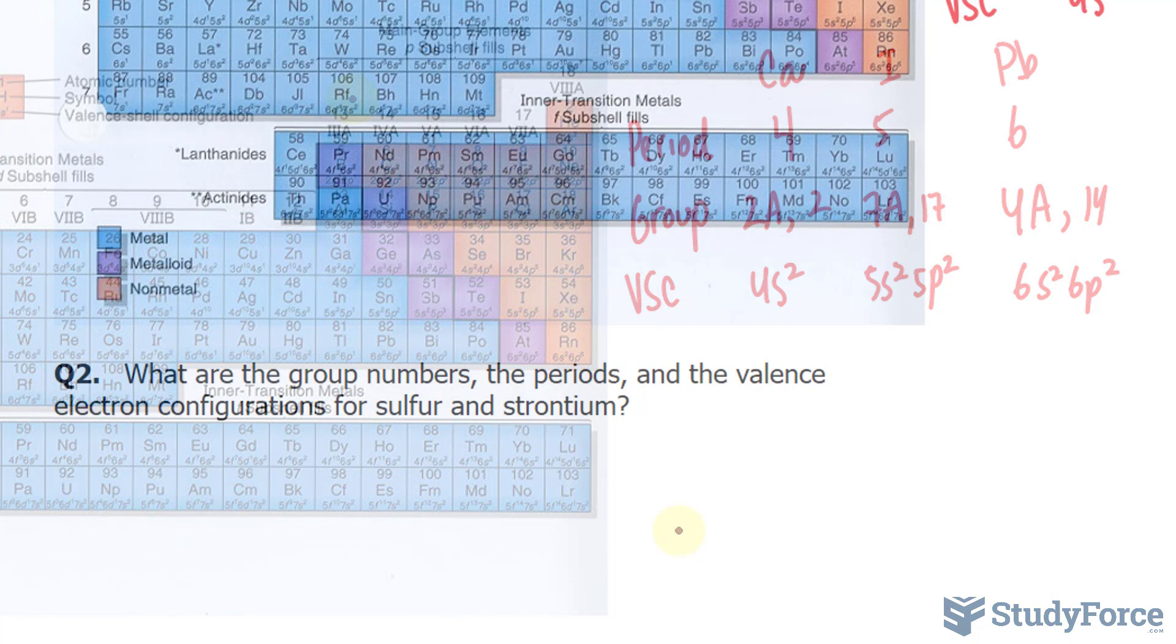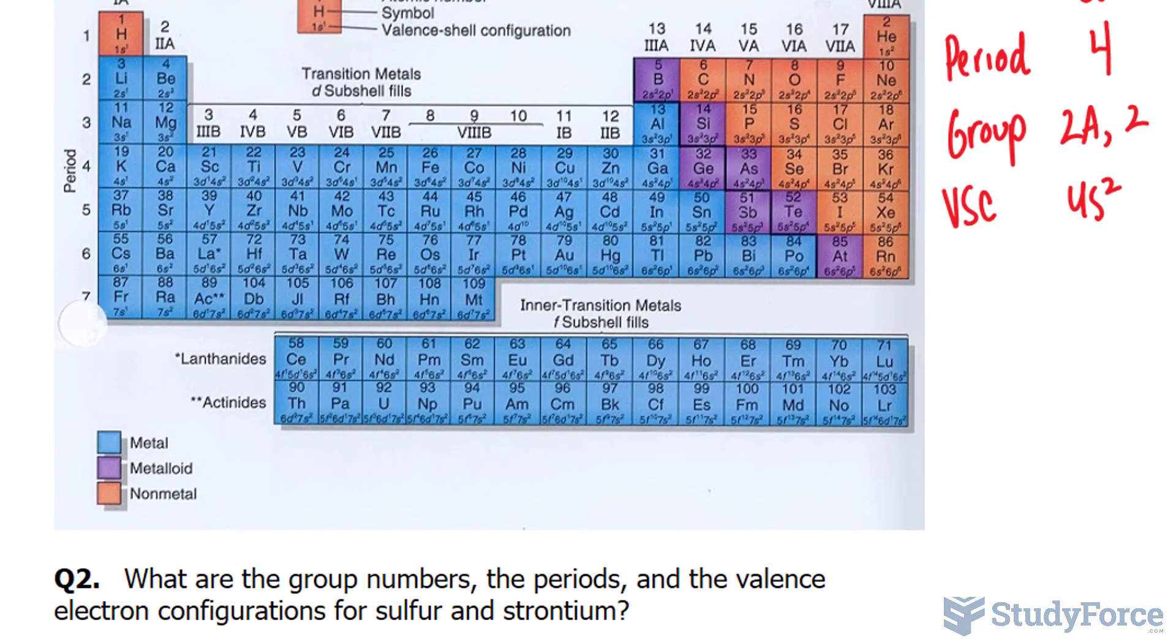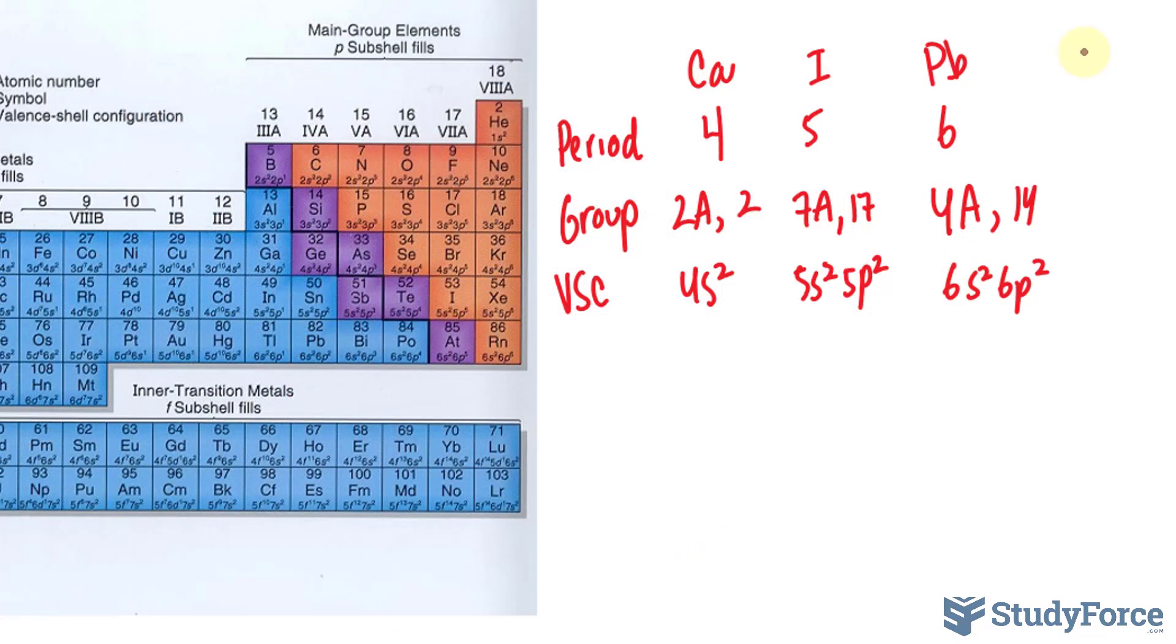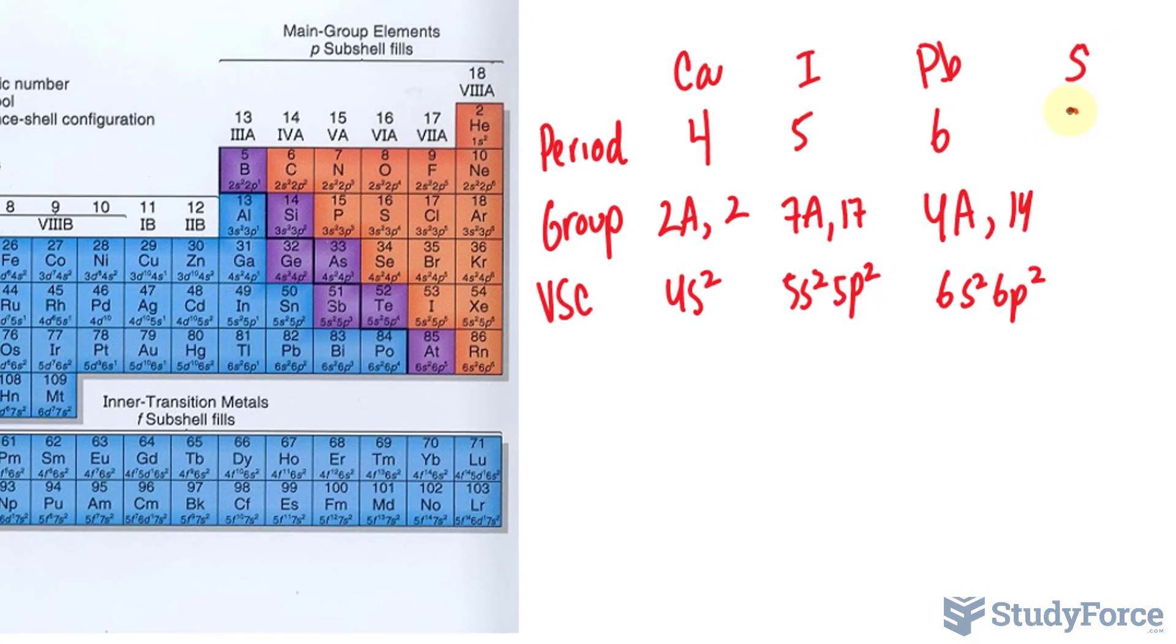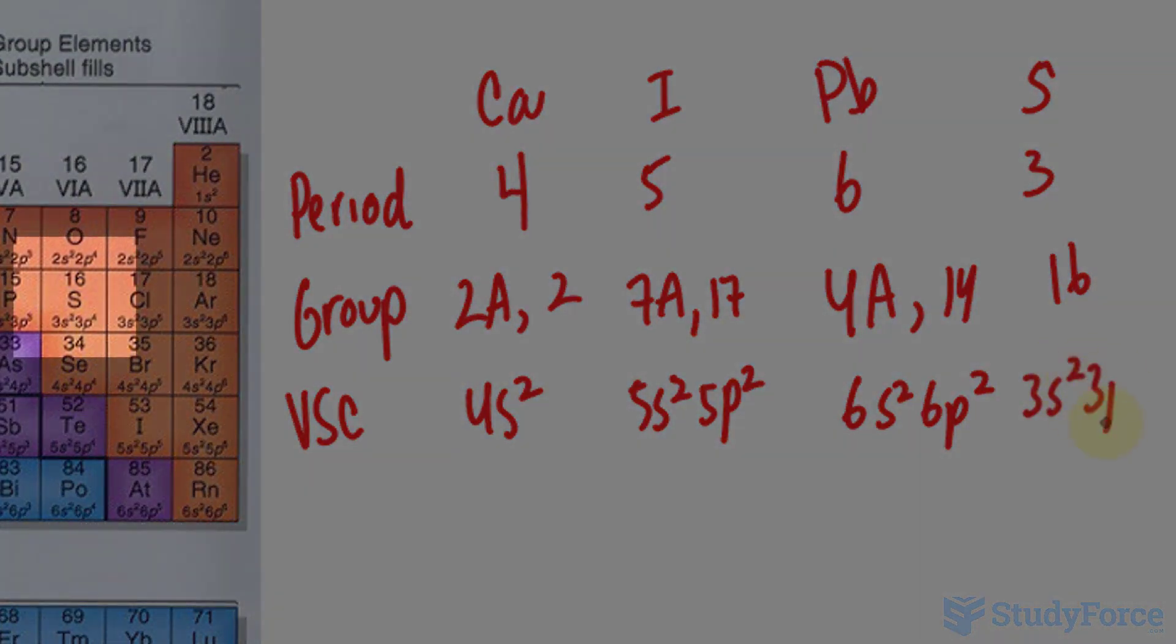Let's move on to question 2. What are the group numbers and periods in the valence electron configuration for sulfur and strontium? So let's continue this. I'll write down sulfur right here. Starting with the period, it's found in the 3rd period, 16th group, and its electron configuration is 3s2, 3p4.